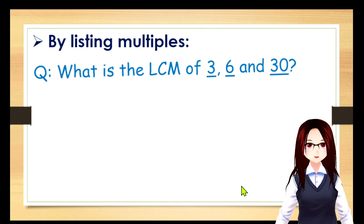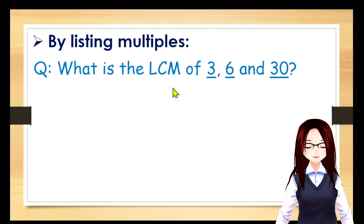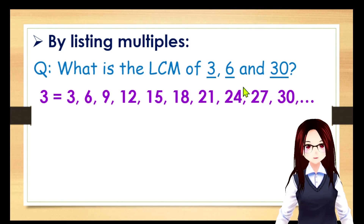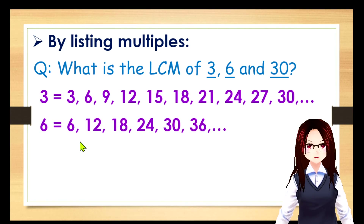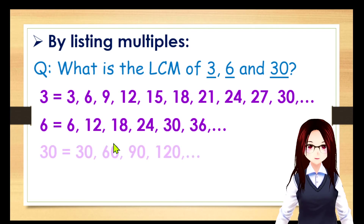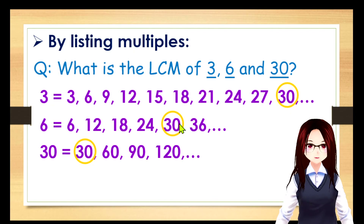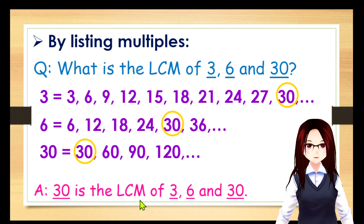Another example: what is the LCM of 3, 6, and 30 by listing multiples? Here we have the multiples of 3, the multiples of 6, and the multiples of 30. As you can see, the least common multiple is 30, so 30 is the LCM of 3, 6, and 30.